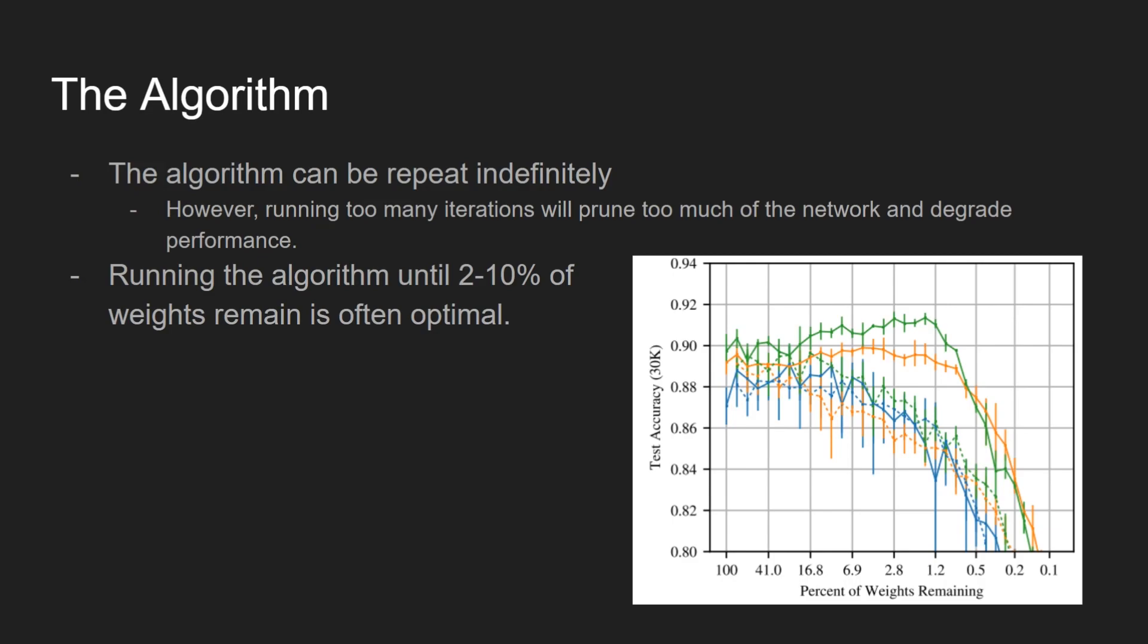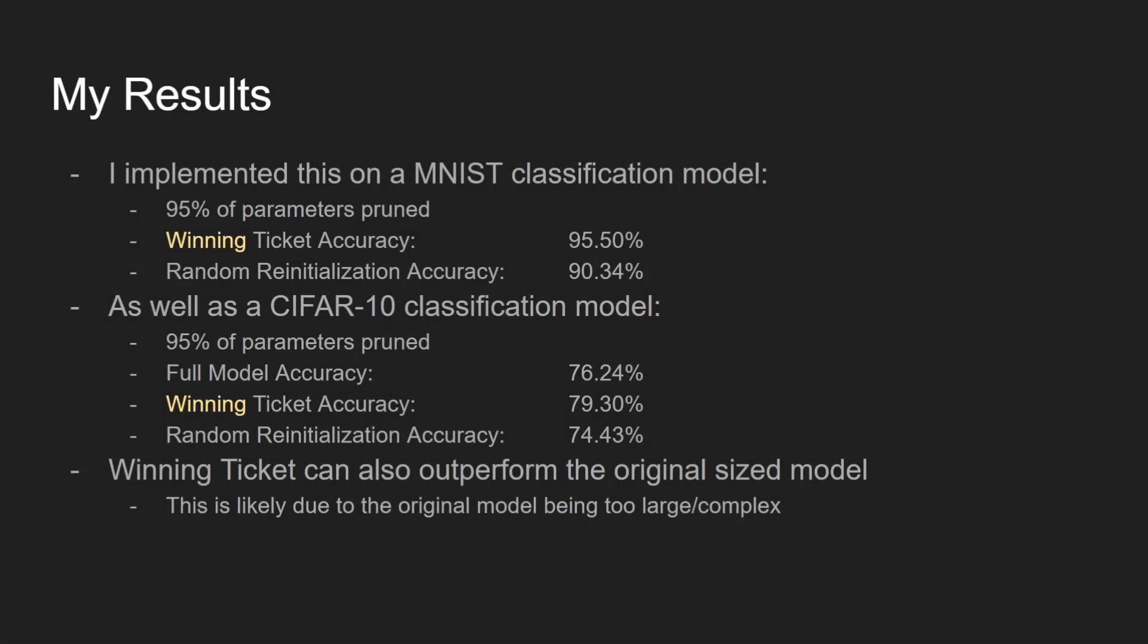After reading the paper, I was inspired to attempt to replicate the results. Despite my code being rough, I was still able to achieve comparable results. I implemented the algorithm on an MNIST classification model, which is a model that classifies handwritten digits. The accuracy of the winning ticket was 95.5%, while the accuracy of that same configuration when re-initialized with random values was 90.34%.